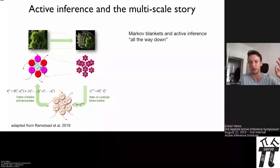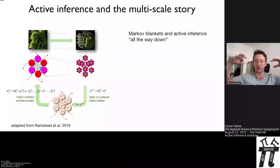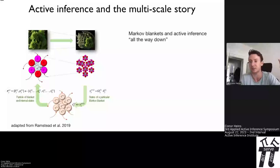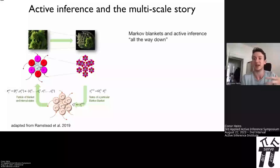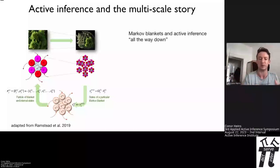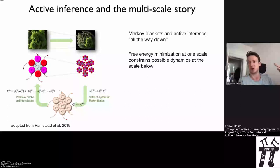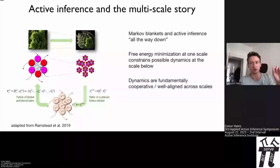At any given scale, the free energy minimizing dynamics — the active inference dynamics — are claimed to be aligned with or parallel to the free energy minimizing gradients at the levels below and above. The claim is that as agents do active inference at one level, it both entails and is constrained by active inference processes of the macro-agent they're participating in. So I'm a cell that's part of a tissue, and also a free energy minimizing cellular agent comprised of organelles that are also minimizing free energy.